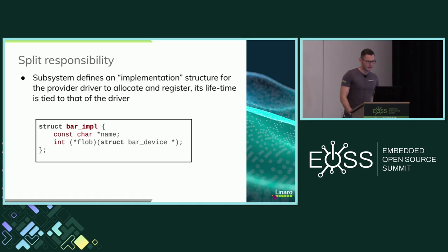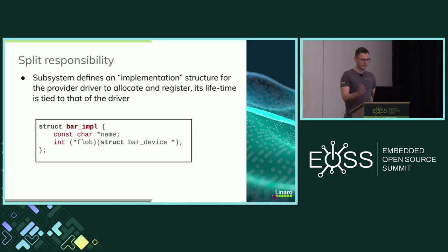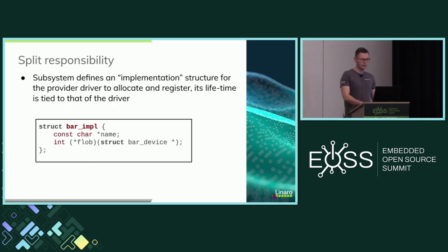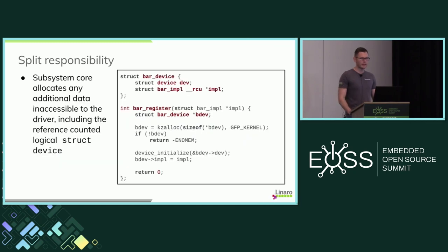I call my preferred solution the split responsibility. Your subsystem defines an implementation structure for the provider drivers. In that structure you have some data — your name, some callbacks the subsystem will use to call into the driver. The provider driver starts probing, allocates this structure — it may be part of a bigger driver structure — and then registers with the subsystem. There is no struct device in the implementation structure, because it's the subsystem that allocates struct device, in a private structure that the provider driver has no access to. In GPIO parlance, this is the split into struct GPIO chip and struct GPIO device.